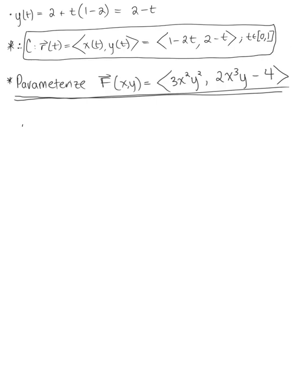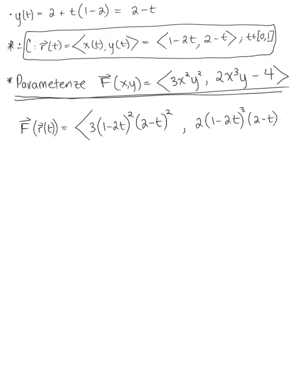Substituting r(t) into the vector field f, the components become 3 multiplied by (1 minus 2t) squared multiplied by (2 minus t) squared, and then 2 multiplied by (1 minus 2t) cubed multiplied by (2 minus t) minus 4. So we have a little bit of calculations to do here.